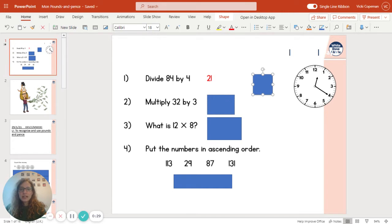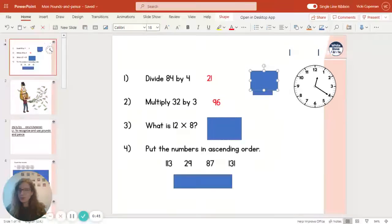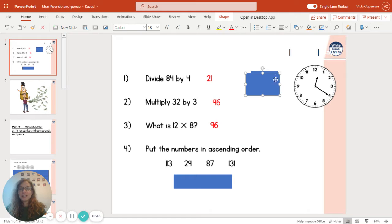Multiply 32 by 3, so column multiplication here to get the answer of 96. And then 12 times 8, so you can either do it using your column multiplication or using your 12 and 8 times tables to get, again, 96.